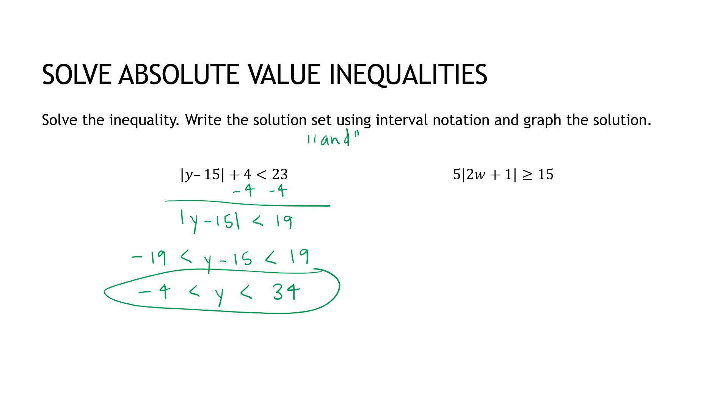Use interval notation and graph. So if I were to graph this, I'm going to put the negative 4 and the 34. The graph would be an open circle at negative 4, because it's not or equal to, an open circle on 34, and everything between is shaded. Because remember, this is always the betweens when we're dealing with an and that looks like this. And in interval notation that would be negative 4 comma 34. Both are open circles, so both are open brackets.